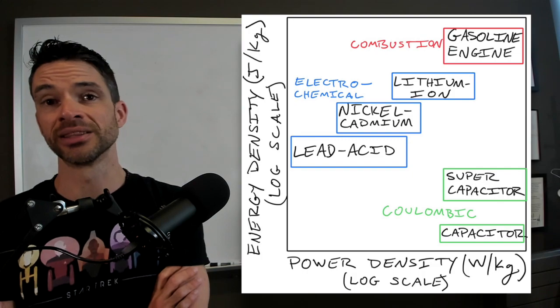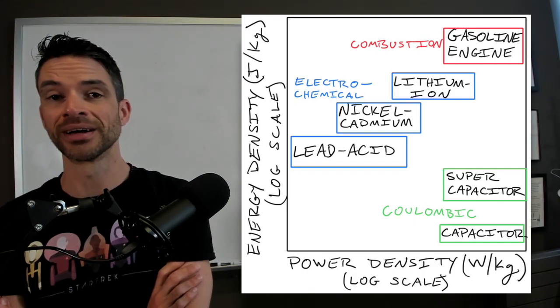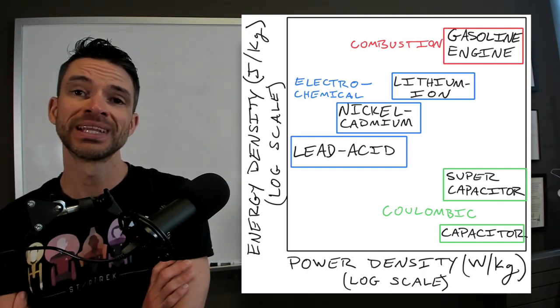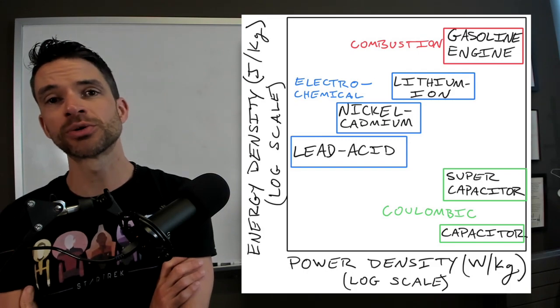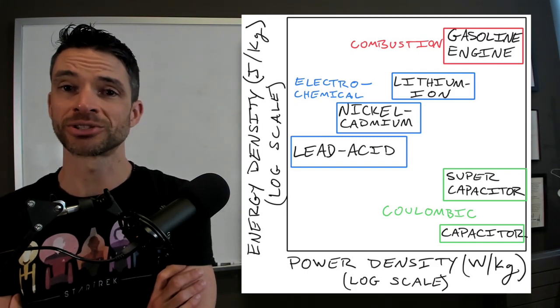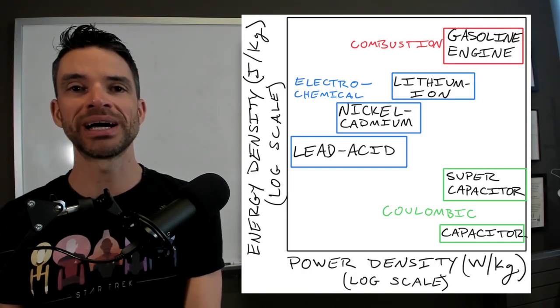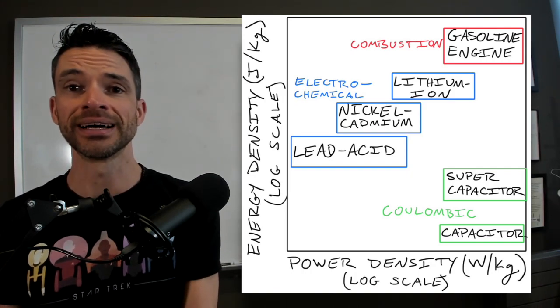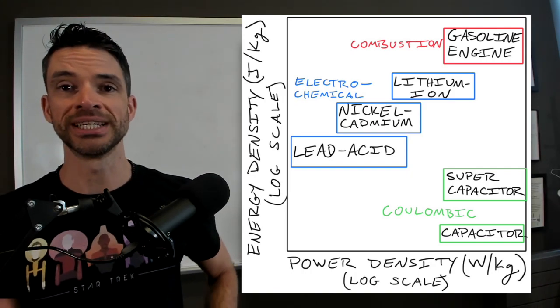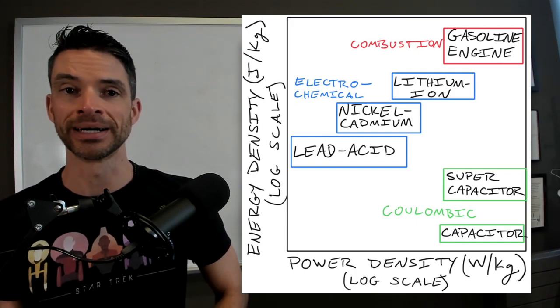And a capacitor, therefore, is on the low end of this Ragone plot. And in the blue squares or rectangles, you have electrochemical storage of energy. And right now, the best kind of energy storage technology is a lithium ion battery.